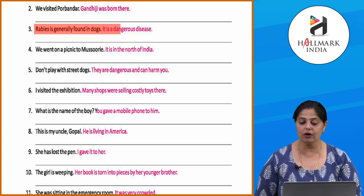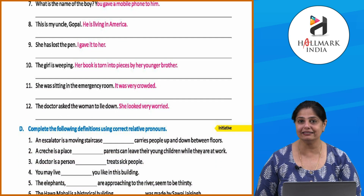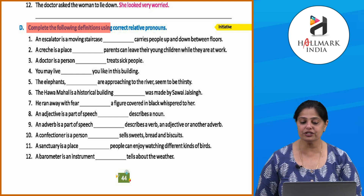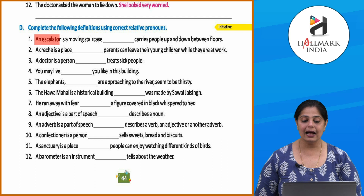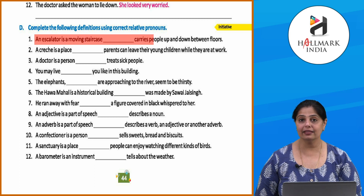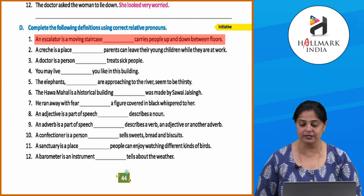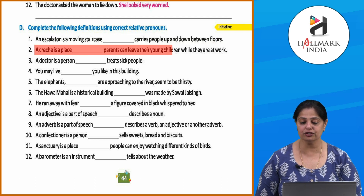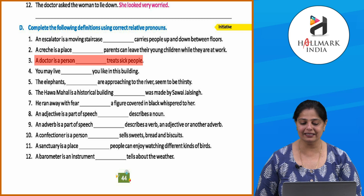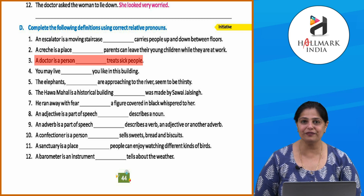'Rabies, which is a dangerous disease, is generally found in dogs.' Now complete the remaining sentences by yourself. Complete the following definitions using correct relative pronouns: 'An escalator is a moving staircase that carries people up and down between floors.' 'A crèche is a place where parents can leave their young children while they are at work.' 'A doctor is a person who treats sick people.' Now you know about clauses very well — before you attempt the exercise, reread the chapter so you don't go wrong.